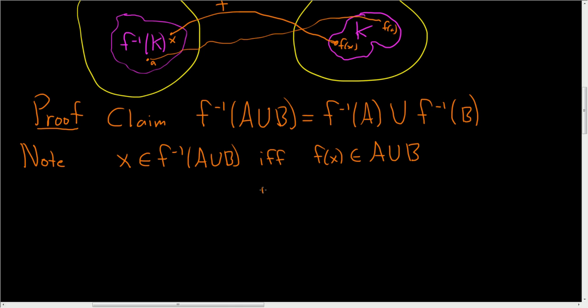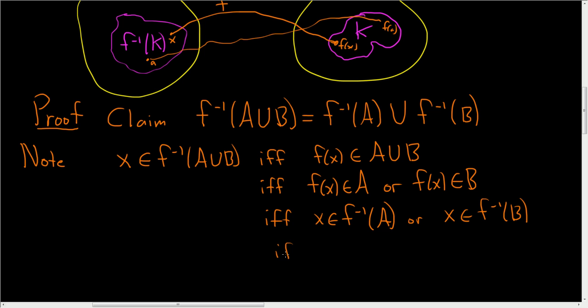Let's keep going. So if and only if, well, what does it mean for F of X to be in the union? It means that F of X is in A or F of X is in B. And this is true if and only if, X is in the inverse image of A under F, or X is in the inverse image of B under F, if and only if.